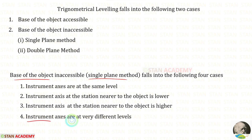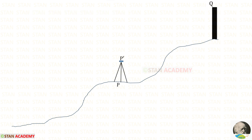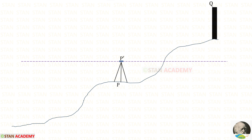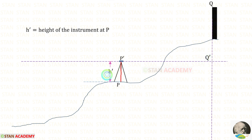Let us assume that this object is a tower. Let us keep the top of the tower as Q. In the ground let us select the first point P. In the point P we have to install a theodolite. P dash is the vertical projection of P. Along the horizontal axis of the telescope in the theodolite we draw a horizontal projection, and along point Q we draw a vertical projection. Let us keep this point as Q dash. Let us keep the height of the instrument as H dash.